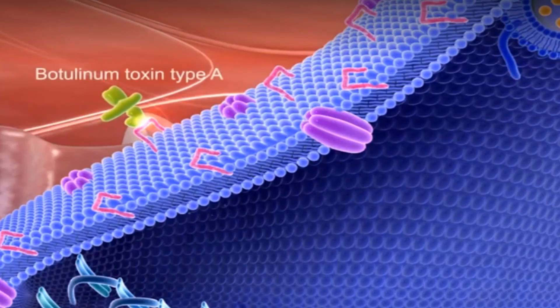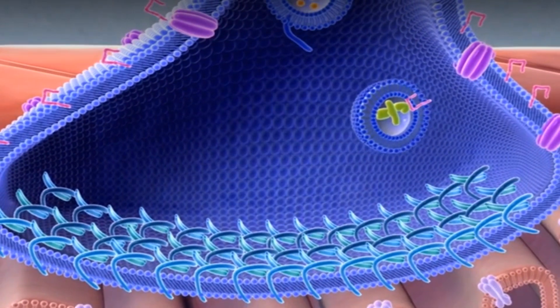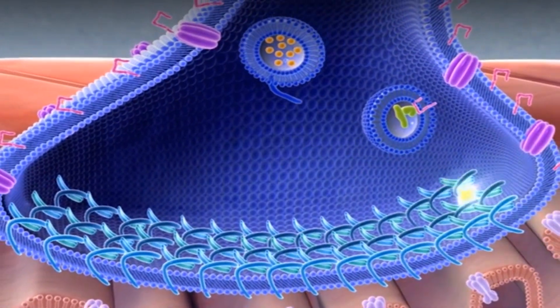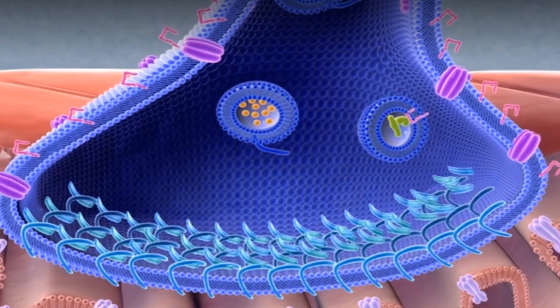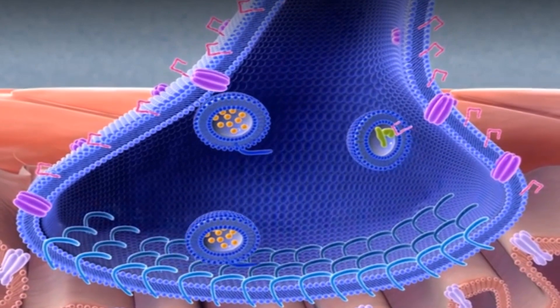When botulinum toxin type A is injected into the treatment area, the toxin enters nerve cells and splits a special protein along the nerve membrane that is necessary for the sacs containing acetylcholine to bind properly.